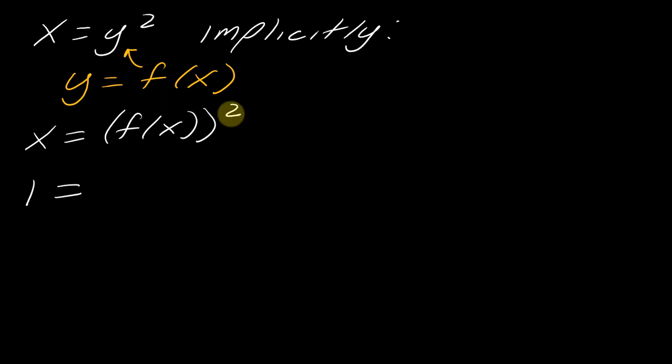And then, what rule do I have to use here to actually take this derivative? I would have to use the chain rule, right? So what I have to do is bring the 2 down. And then I would technically subtract 1 from the exponent here, right? Except I don't need to write anything here, so we just know kind of implicitly there's a 1 here.